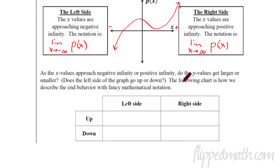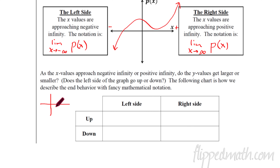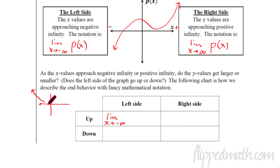The following chart is how we describe the end behavior with fancy mathematical notation. Suppose I have a function where on the left-hand side it goes up. As I go to the left and X goes this way, maybe the function goes up like this. We would write: the limit as X approaches negative infinity of P of X equals infinity. It's going to go up forever, and the Y value is eventually going to be infinity. That's what happens if on the left the function is increasing as you go left.